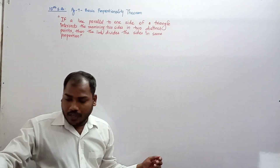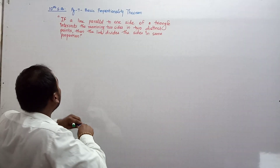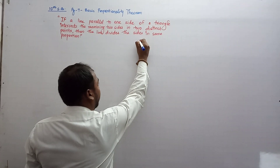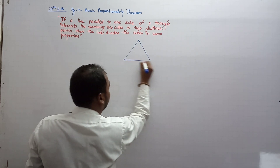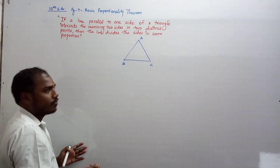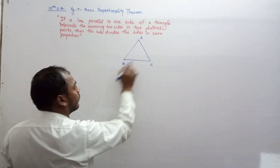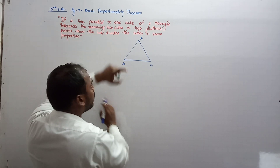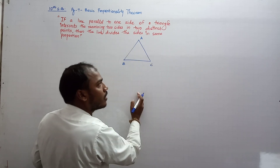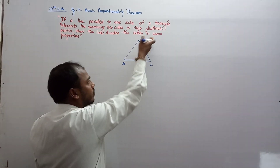This theorem is easy to understand. We have a triangle, and we will go step by step. If a line is parallel to one side of a triangle, we first draw a triangle. Let's say we have triangle ABC. Instead of ABC you can write PQR or XYZ as well — no issues.